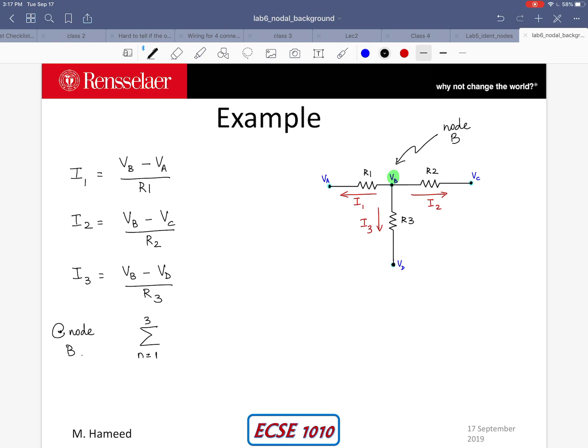So summation of all the currents 1 through 3, I sub N, goes to 0. This implies that we have an equation now relating all our nodal voltages. So we have VB minus VA divided by R1 plus I2 which is VB minus VC divided by R2 plus I3 which is VB minus VD divided by R3 equals 0. Now this is going to be a linear equation and if you have more nodes in your circuit you could apply KCL at each node to write a linear equation.